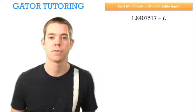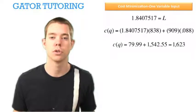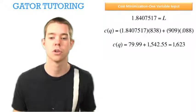Now that we've solved for L, we can plug it back into our total cost function because we know W and R. The minimum cost of producing those 22 units is $1,623.